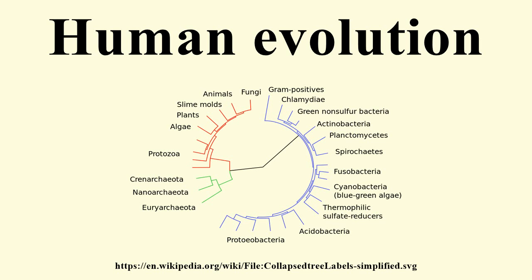It is believed that Homo erectus and Homo augustus were the first to use fire and complex tools, and were the first of the hominin line to leave Africa, spreading throughout Africa, Asia, and Europe between 1.3 to 1.8 million years ago.